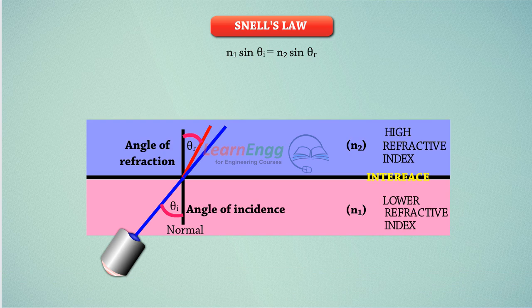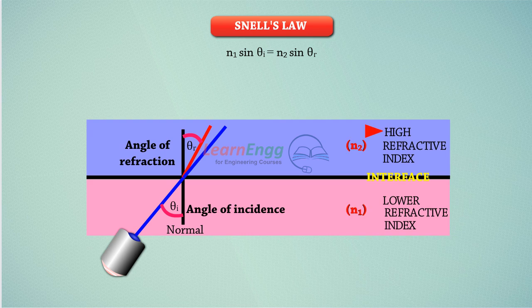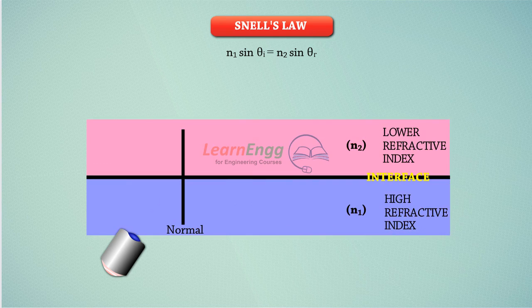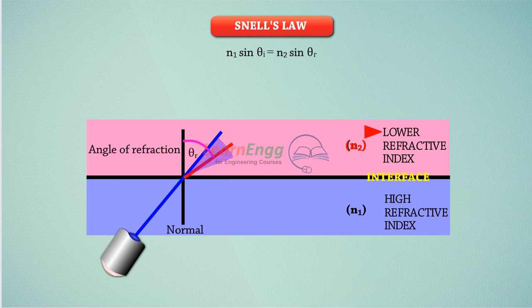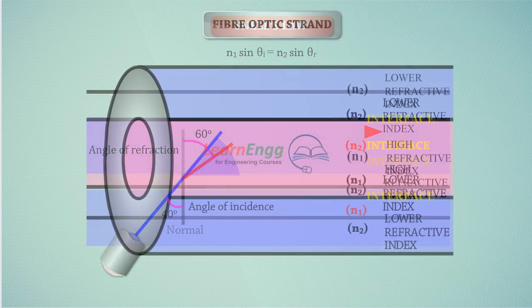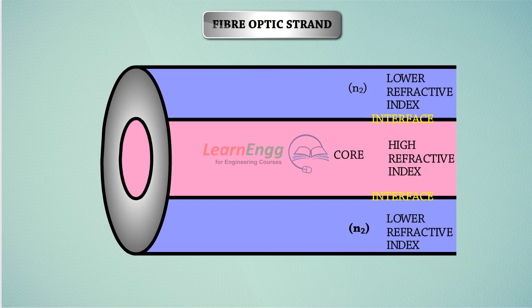Snell's law states that if the refractive index of the second medium is greater than the first, the angle of refraction is smaller than the angle of incidence. Conversely, if the refractive index of the second medium is smaller than the first, the angle of refraction is greater than the angle of incidence. This is the principle that enables light to travel through fiber optic strands.